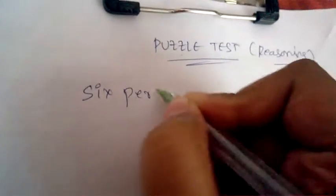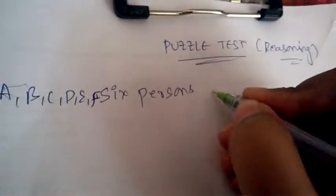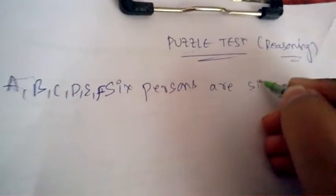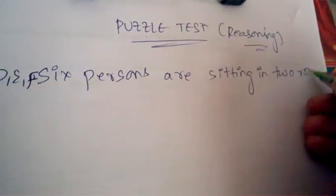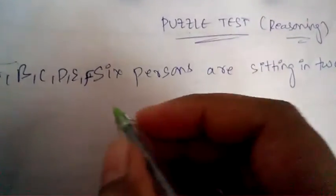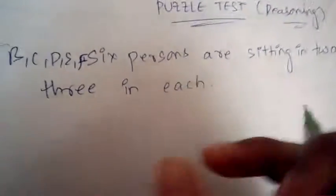Let's see a paragraph first. Six persons A, B, C, D, E, F are sitting in two rows, three in each.